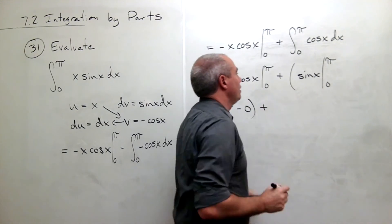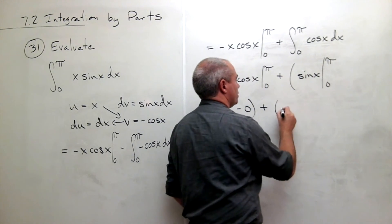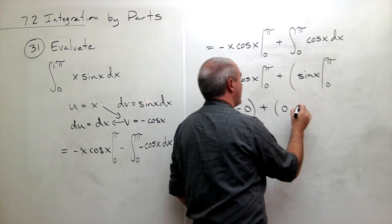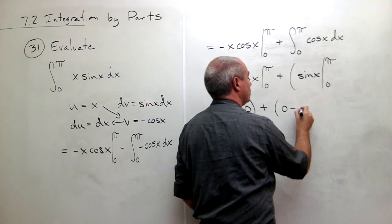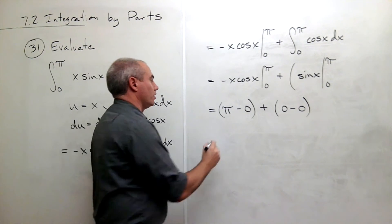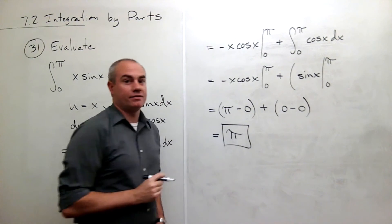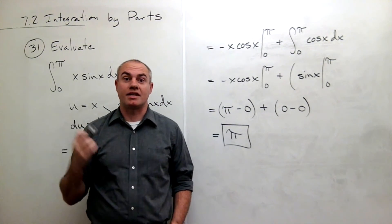Plus, if I plug in pi here, I get sine of pi, which is 0, minus sine of 0, which is 0. And so after all of this, we just get pi as the answer to this definite integral.